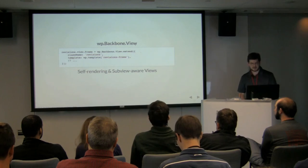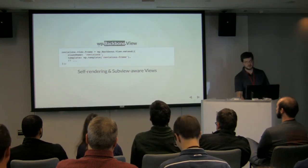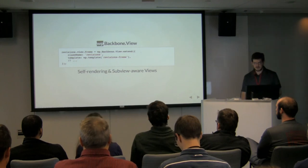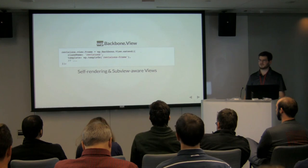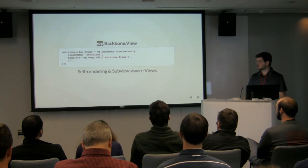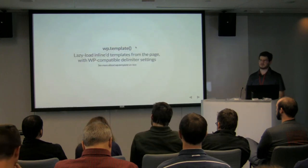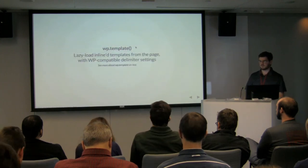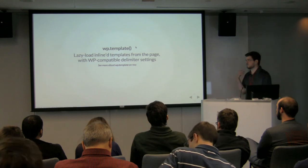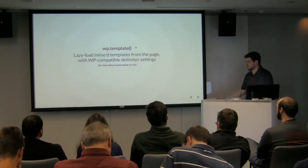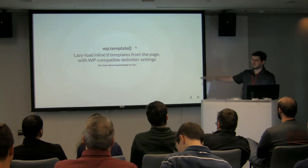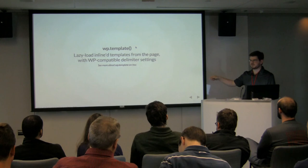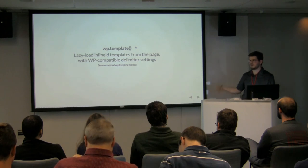WP.Backbone.View does a couple of things to be sub-view aware, so it will be smart about rendering itself and getting rid of itself if it's inside a sub-view that's being hidden or shown. And finally, WP.template is a wrapper around Underscore's templating mechanism that makes a couple of assumptions — for example, that you might have your templates on the page loaded with an ID via jQuery — and it ensures you're using delimiter syntax that won't conflict with old versions of PHP or ASP.